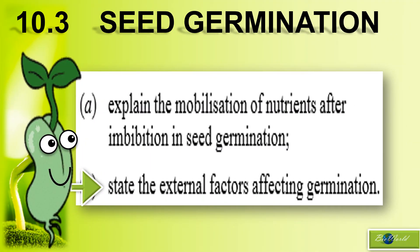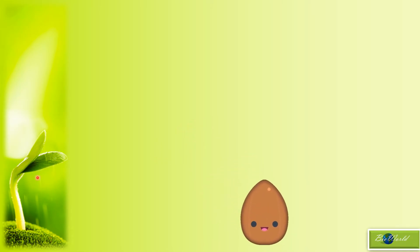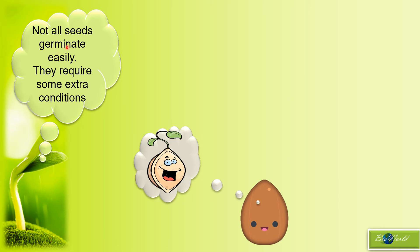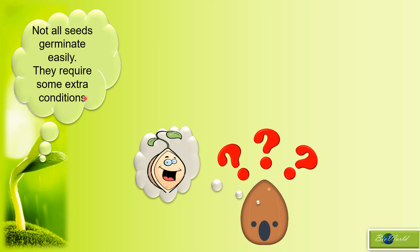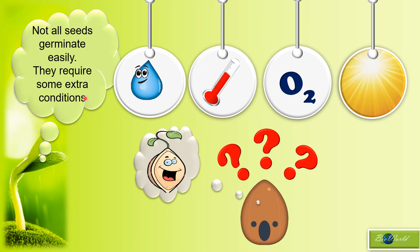So we have learned how seeds germinate, involving imbibition and the mobilization of nutrients. Now I want to talk about some external factors that can affect germination. After learning about imbibition, we realized a seed just needs to be exposed to water to germinate. But unfortunately not all seeds can germinate that easily — some require extra conditions related to water, temperature, oxygen, and even sunlight.